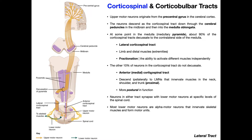The upper motor neurons of the anterior corticospinal tract synapse with lower motor neurons that tend to innervate muscles in the neck, the shoulder girdle, the hip girdle, and the trunk — pretty much proximal muscles and postural muscles. So if we think of the erector spinae, the abdominal muscles, the shoulder girdle muscles, and the hip girdle muscles, these are going to be muscles innervated by lower motor neurons controlled through the anterior corticospinal tract.